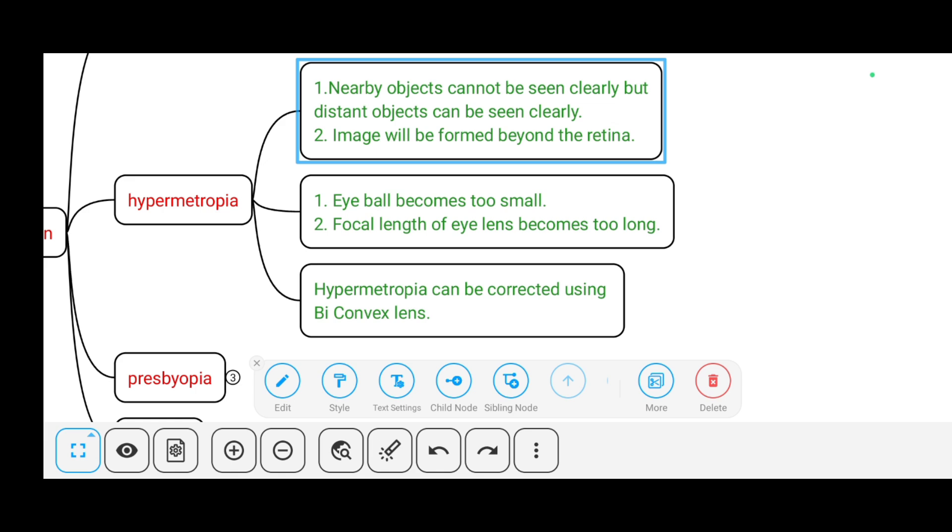What are the causes for hypermetropia? The eyeball becomes too small and the focal length of the eye lens becomes too long. Hypermetropia can be corrected using biconvex lens, whereas for myopia we use biconcave lens.